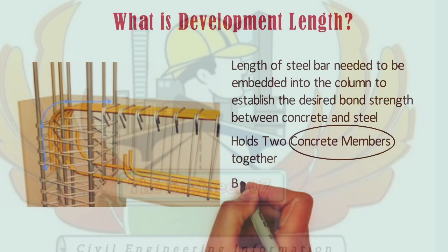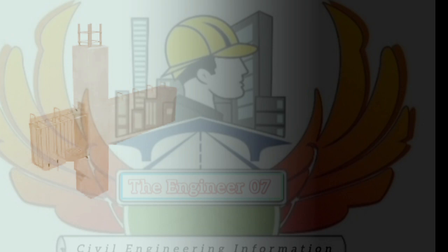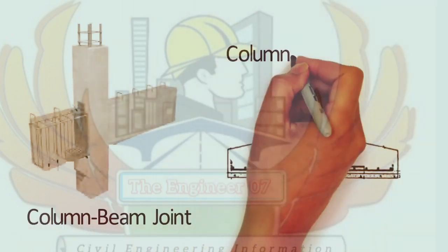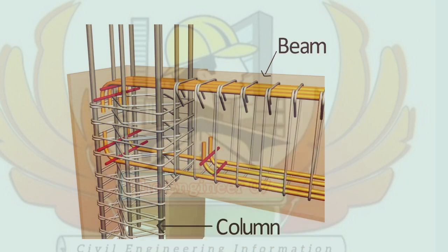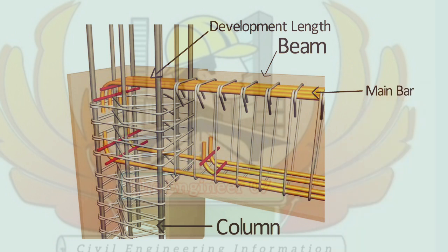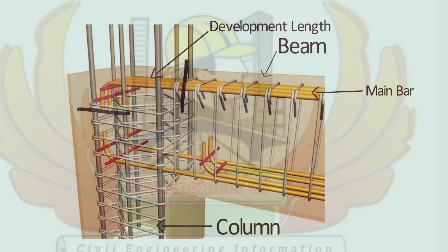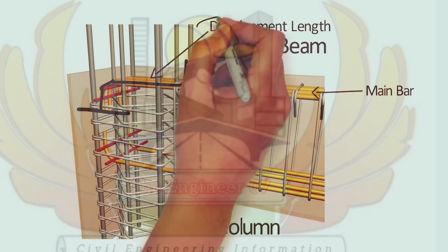Concrete members like beam, column, footing, etc. Development length is provided at column-beam joint or column-footing joint. Here you can see in the picture, this is the development length for beam-column joint. This is the main bar in the beam which is extended from here to here to safely transfer stresses from beam to column, and this portion of length is called development length.